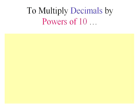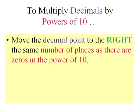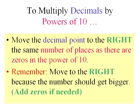I've got a new shortcut for you. To multiply decimals by powers of ten, move the decimal place to the right, of course the right, so it's a larger number, the same number of places as there are zeros in the power of ten. Remember, don't forget, when you're multiplying, move to the right, because the number should get bigger. If you need to add zeros, you can.